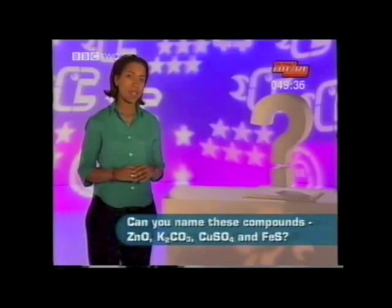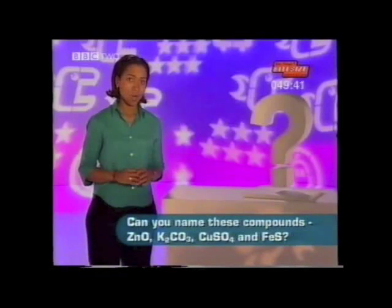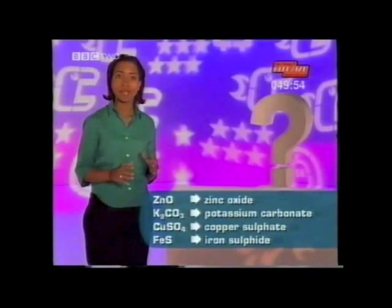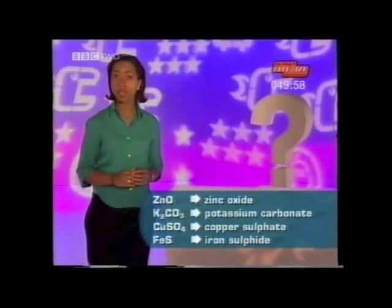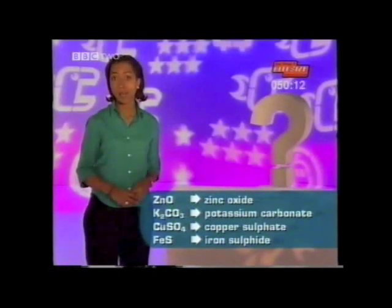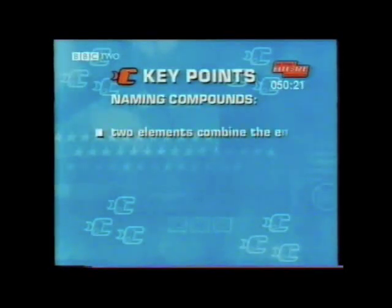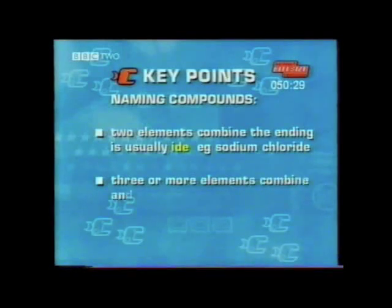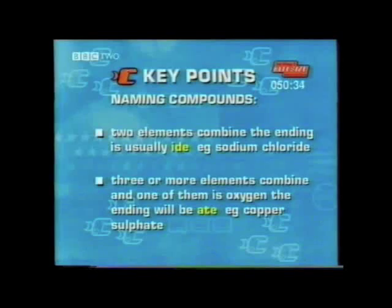Can you name these compounds? ZnO, K2CO3, CuSO4 and FeS. Why not stop the tape and have a think about them? So, let's have a look at the chemical formulae. ZnO is zinc oxide. K2CO3 is potassium carbonate. CuSO4 is copper sulphate. And FeS is iron sulphide. If you weren't sure of the answers, here are some key points: when two elements combine, the ending is usually something -ide, such as sodium chloride. When three or more elements combine and one of them is oxygen, the ending will be something -ate, such as copper sulphate.